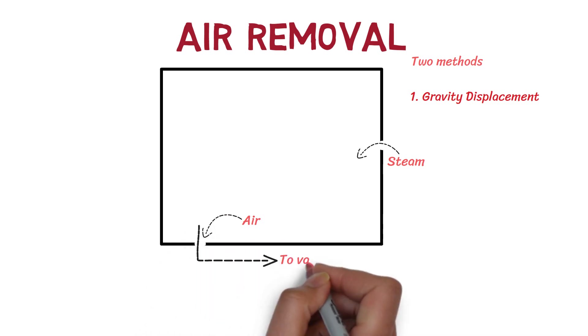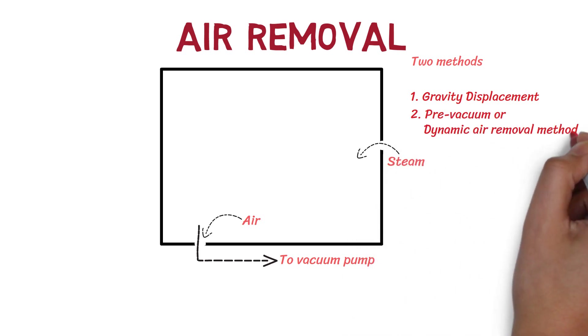The other method involves a vacuum pump to remove air from the chamber before the steam is introduced. This is called the pre-vacuum or dynamic air removal method. This method is more effective for sterilizing porous or densely packed materials as this can remove air even from the packages.